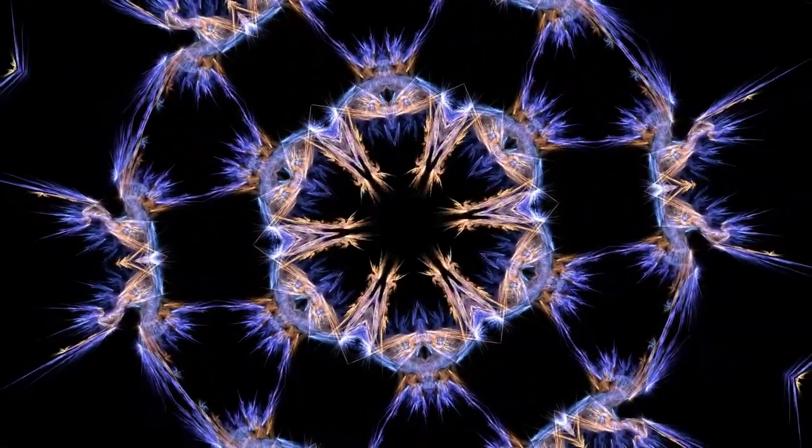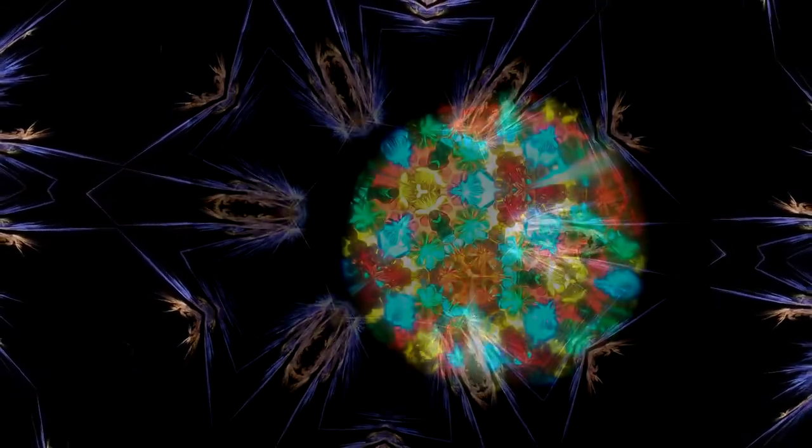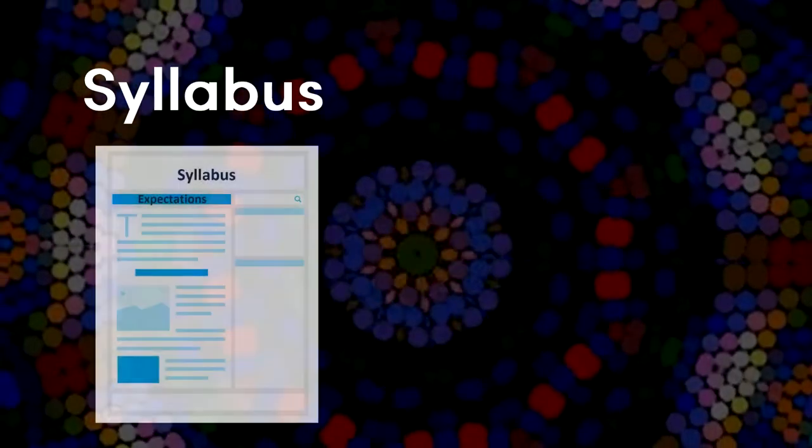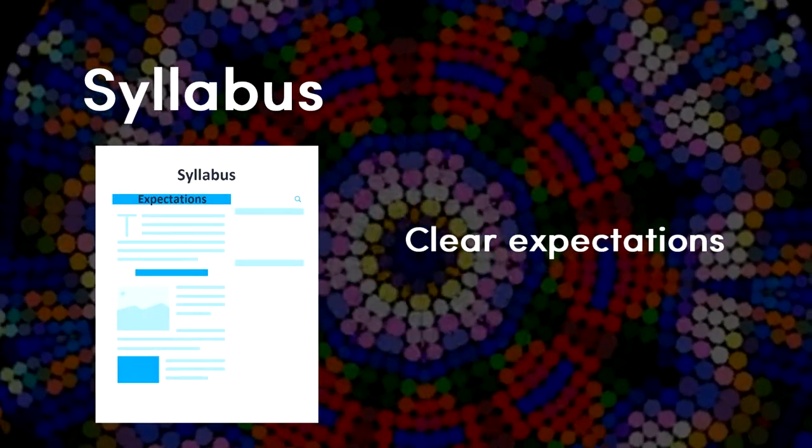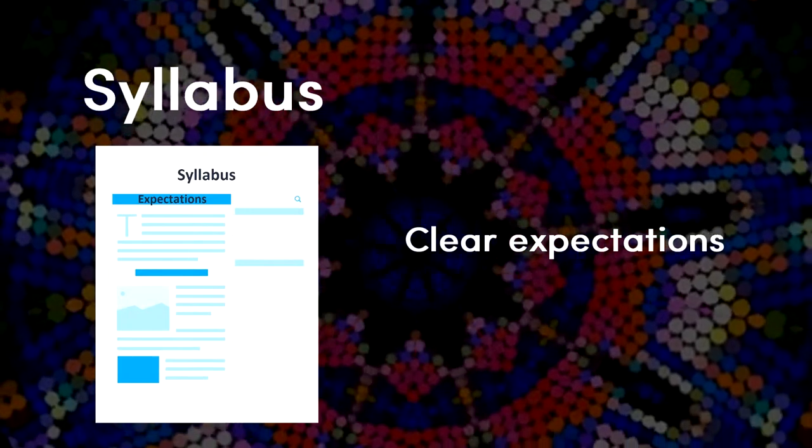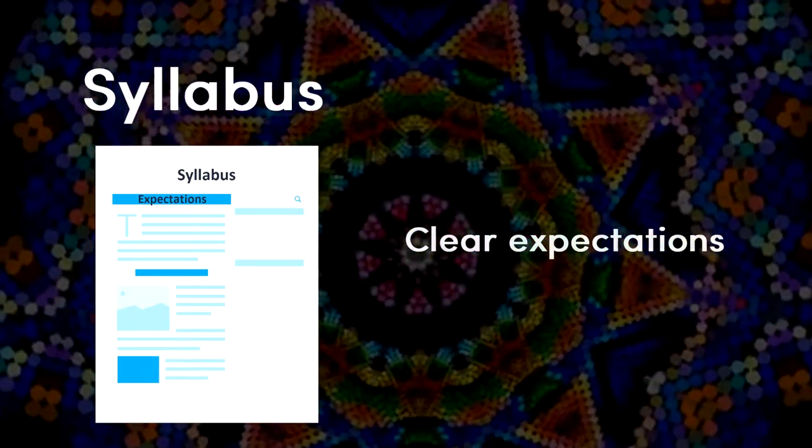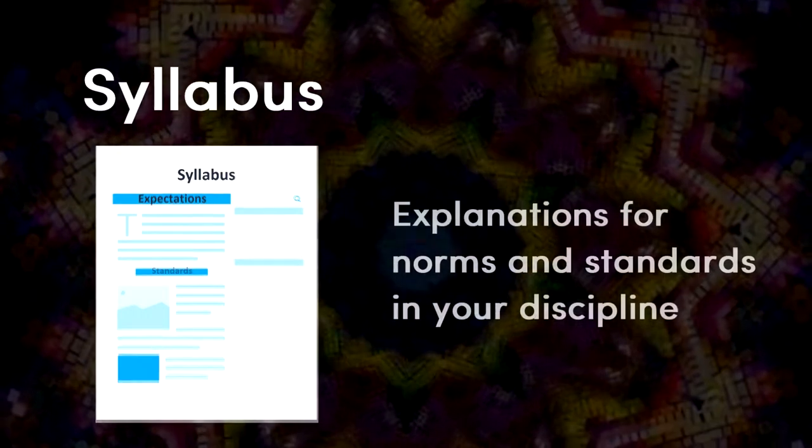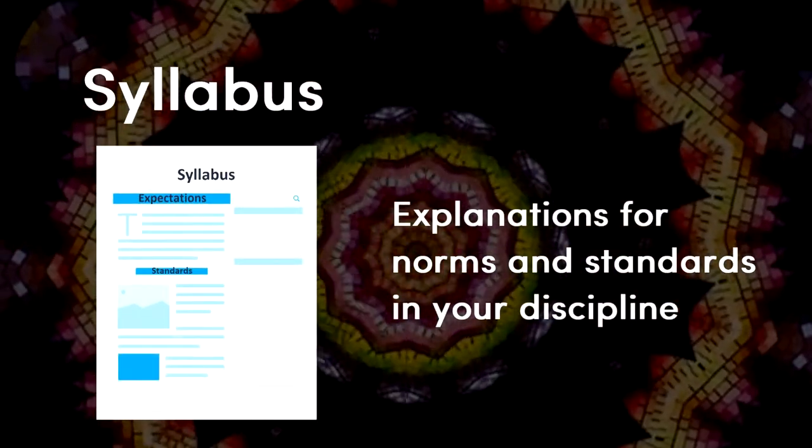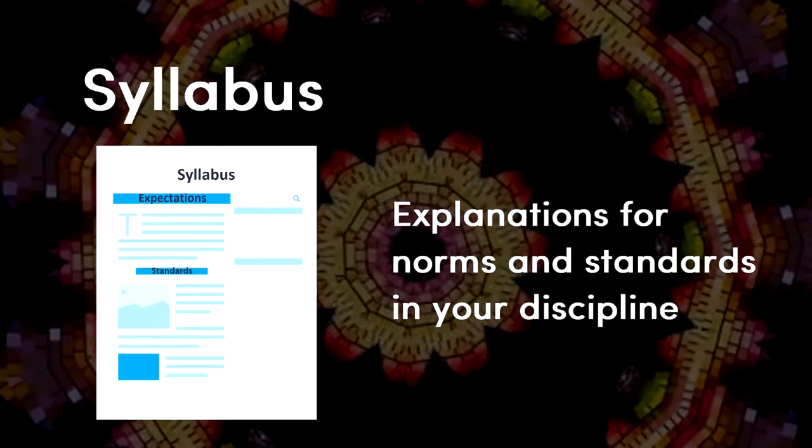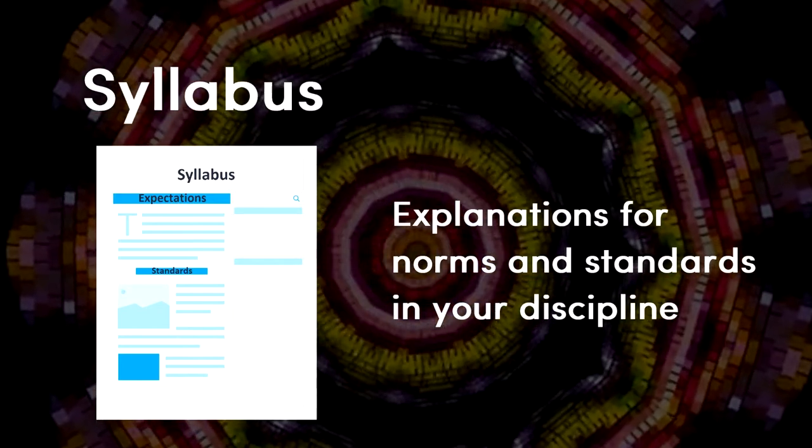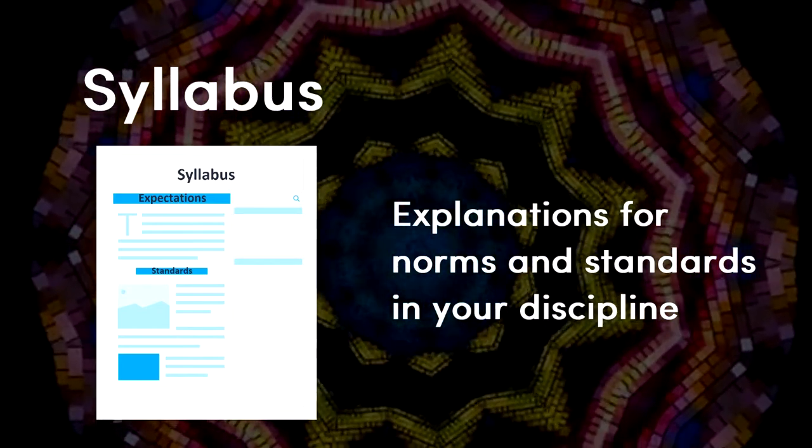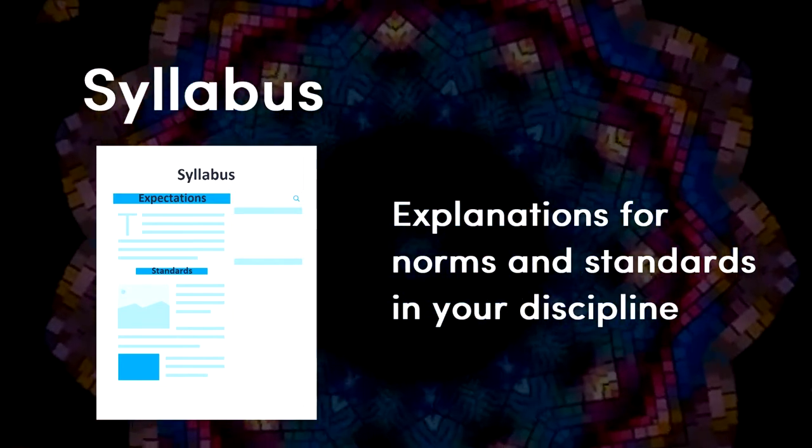Now hopefully you're open to a deeper examination of specific elements within your course. Begin with your syllabus and course objectives. Did you make course expectations clear? Clear expectations help students know if they are ready to take your course. Did you include explanations for norms and standards in the discipline? Doing this helps students with different backgrounds and levels of experience develop awareness early on.